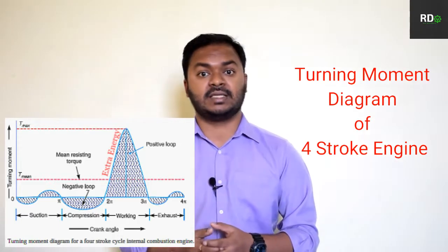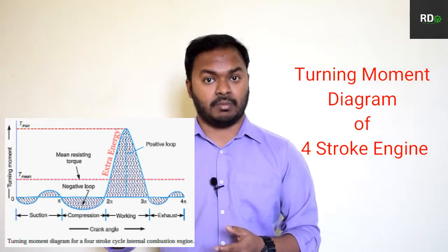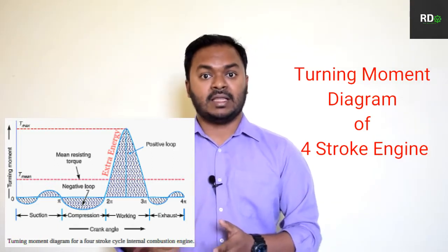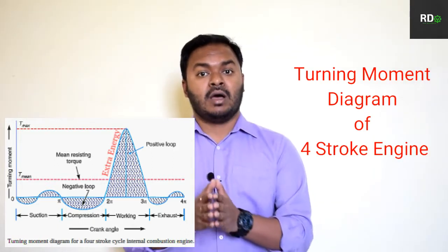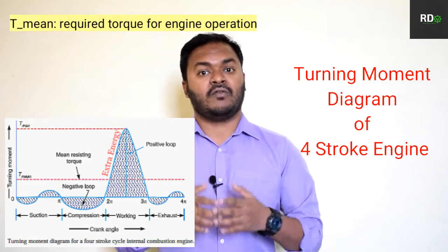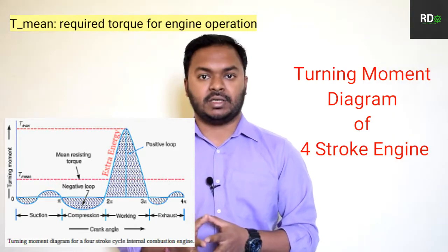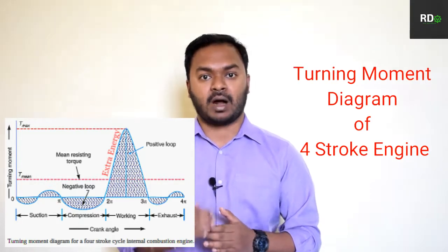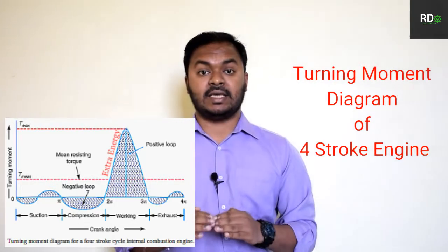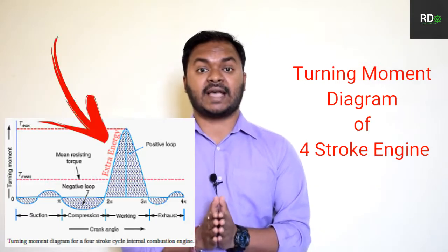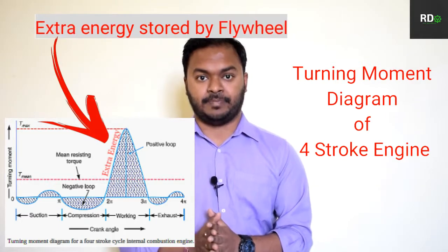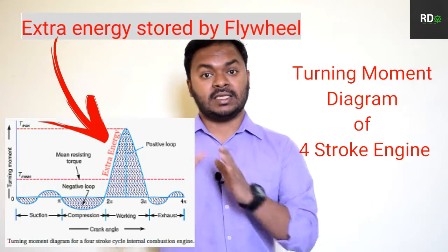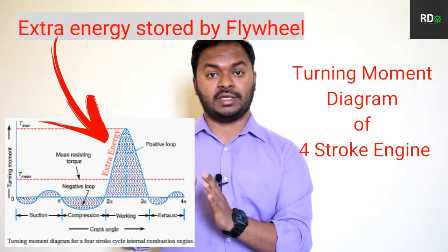There is a horizontal line passing through it called T-min. You can follow in the diagram — this is the energy requirement for the engine to operate continuously. Above this line you can see a part mentioned as excess energy or extra energy, shown in red font.